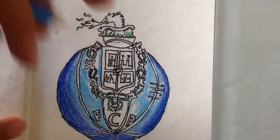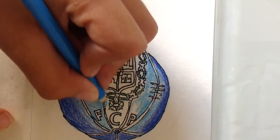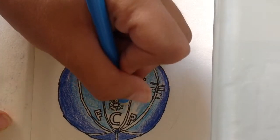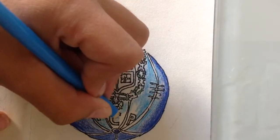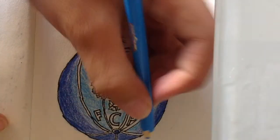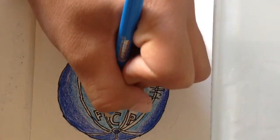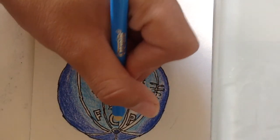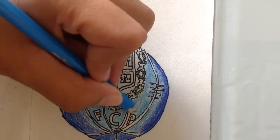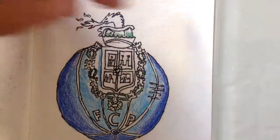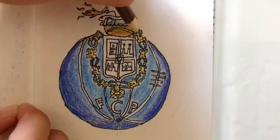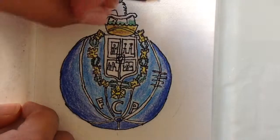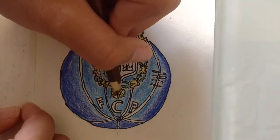Color the dragon green. I just added some brown to get more of a gold color.